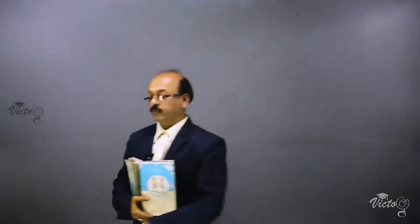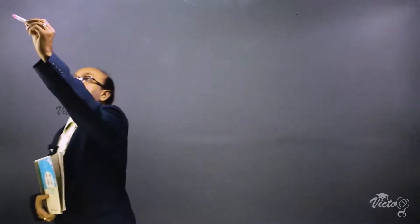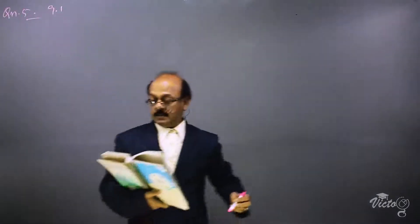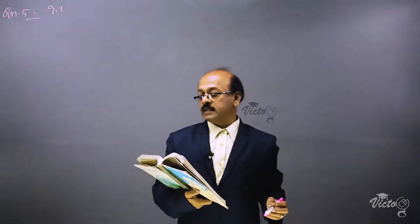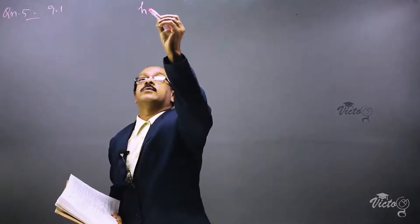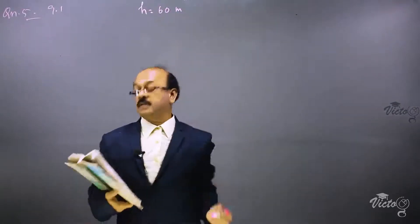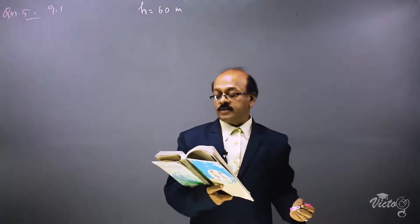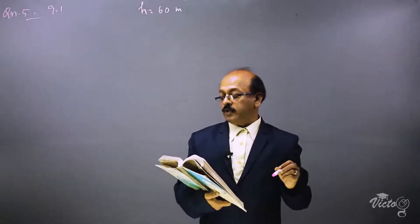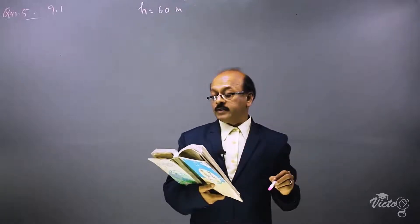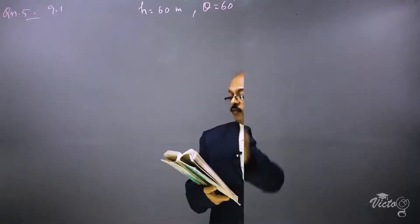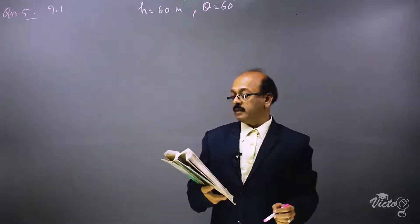Next is question number 5 of 9.1. The question is: a kite is flying at a height of 60 meters above the ground. It is given that the string attached to the kite is temporarily tied to a point on the ground. The inclination of the string with the ground is 60 degrees.